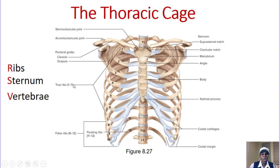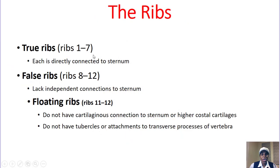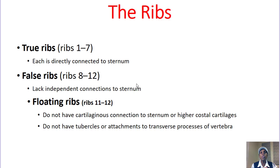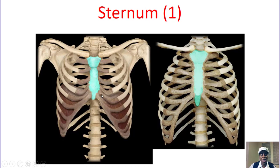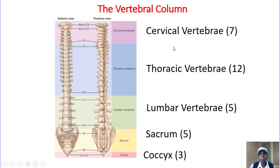Let's move to the thoracic cage. RSV: ribs, sternum, vertebrae. The ribs — we have 12 of them. Ribs 1 to 7 are true ribs, directly attached to the sternum. Ribs 8 to 12 are false, and 11 to 12 are floating. Floating means they do not touch the sternum; false means they connect to the sternum via cartilage or bone fusion.